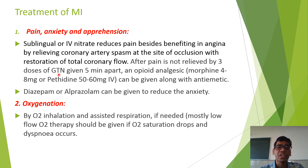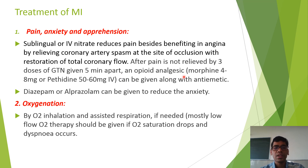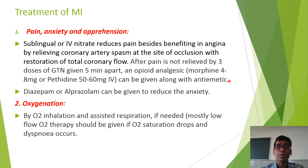Three doses of GTN (0.5 mg each) are given five minutes apart. If pain is not relieved after three doses, opioid analgesics are given: morphine 4 to 8 mg or pethidine 50 to 60 mg, preferably as intravenous treatment rather than intramuscular. Morphine and pethidine are given along with an antiemetic like domperidone or metoclopramide because of the chances of vomiting.